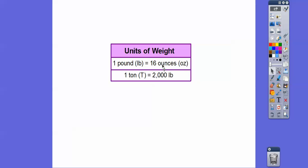So here's our conversion table right here. One pound is equal to 16 ounces and then a ton, which is a T right there, capital T, one ton is equal to 2,000 pounds.